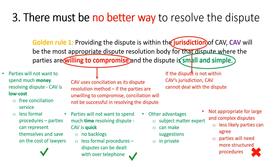On the other hand, Consumer Affairs Victoria will not be the most appropriate body for larger and more complex disputes. Where a dispute is large and complex, the parties are less likely to agree on a resolution, but Consumer Affairs Victoria cannot make a binding decision. Also, parties to a large and complex dispute will often need structured procedures to conduct their dispute efficiently, but Consumer Affairs Victoria's less formal procedures do not provide this structure.